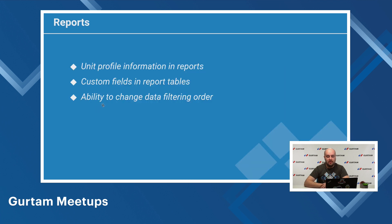Unit profile information in reports: we added the possibility to display unit characteristics from the profile tab in reports, as well as the unique ID from the general tab in unit settings. Custom fields in report tables: there is now the possibility to display them in separate columns in different report tables. This option is available for custom fields of units, unit groups, drivers, and trailers. The ability to change data filtering order is also now available for users.